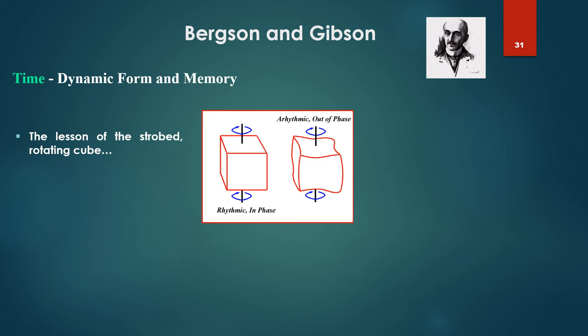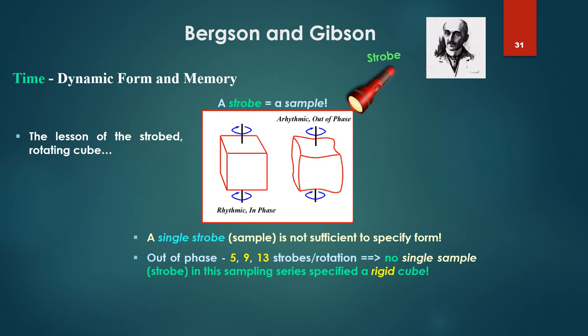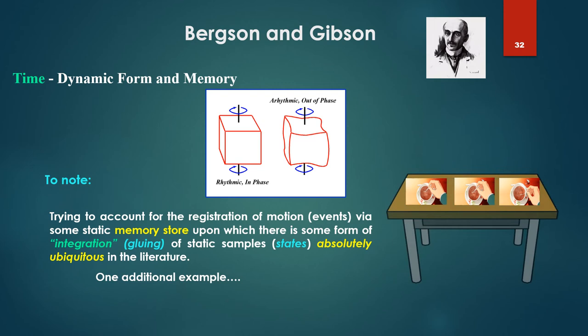This is the lesson of the strobe rotating cube. A strobe is a sample. But what we saw is a single strobe, a sample, is not sufficient to specify form. When the strobe was out of phase - 5, 9, 13 strobes per rotation - no single sample, that is strobe, in the sampling series specified a rigid cube. To note here, trying to account for the registration of motion, that is events, via some static memory store upon which there is some form of integration, gluing of all these things, so we get motion of the static samples, that is states - this is absolutely ubiquitous in the literature.